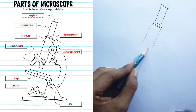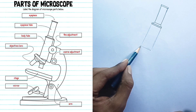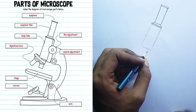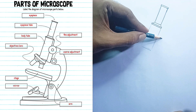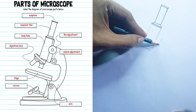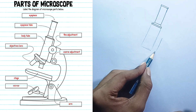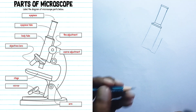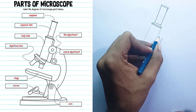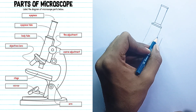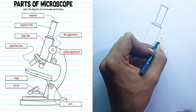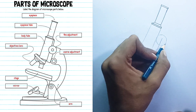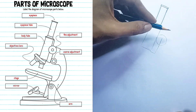Objective lenses: these are the primary magnifying lenses located on the revolving nosepiece just above the stage. Microscopes typically have several objective lenses of different magnifications, e.g. 4x, 10x, 40x, 100x, which can be rotated into position to change the total magnification. They are responsible for collecting light from the specimen and forming the first magnified image.